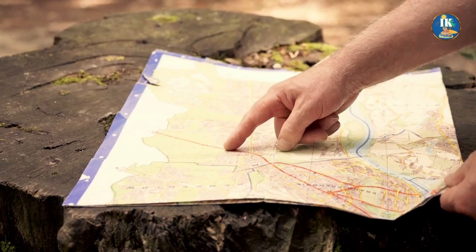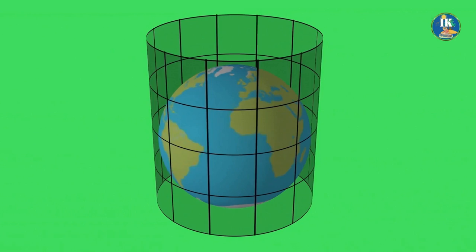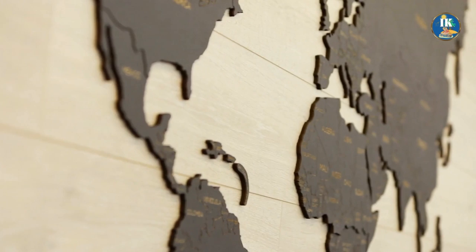So we know that the Mercator projection distorts the size and shape of countries and continents, but how exactly does it work? The Mercator projection is what's known as a cylindrical projection. That means it takes the globe and wraps it around a cylinder, with the equator as the center line. The resulting map is then flattened out, which creates the distortion.